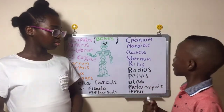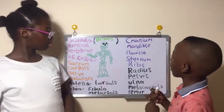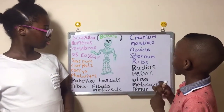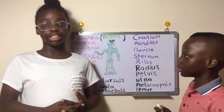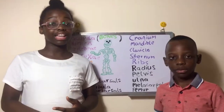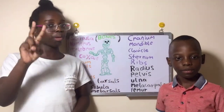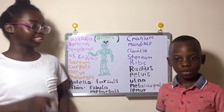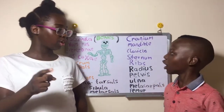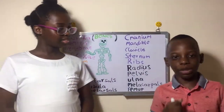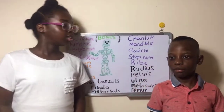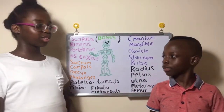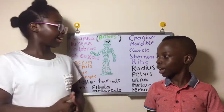Let's start with the upper part of the skeletal system. The skeletal system is divided into two parts: the axial and the appendicular. Let's start with the axial.